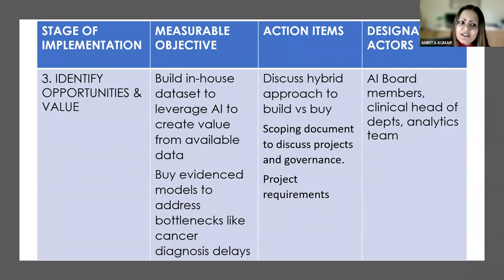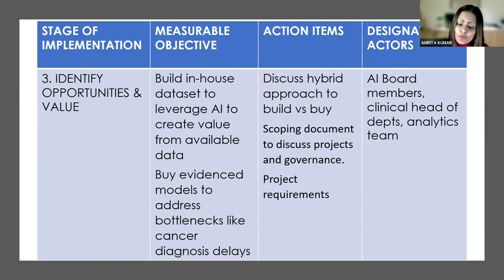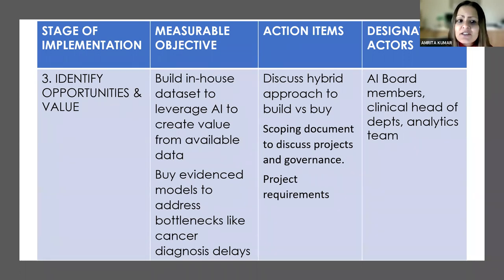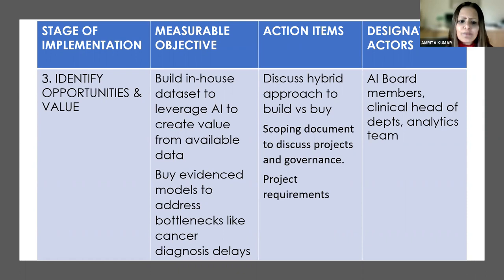The third step is now to look at which opportunity to pursue. Once a broad idea of all the different clinical priorities are aligned and the stakeholder group decides how this measures up to the hospital's strategy, a decision has to be made: do you want to build an in-house data set to leverage the AI and create value? Or do you want to buy evidence-based models to address bottlenecks like cancer diagnosis delays?